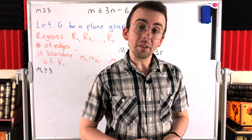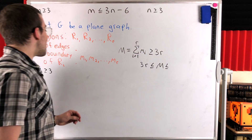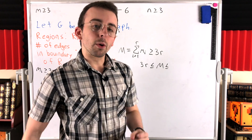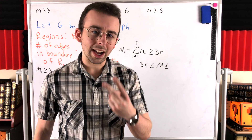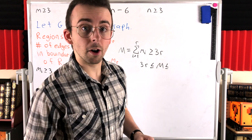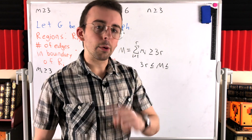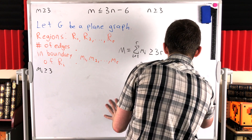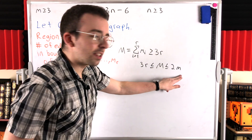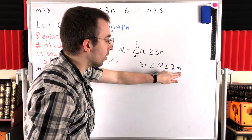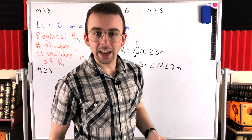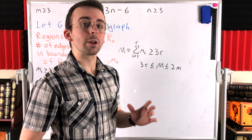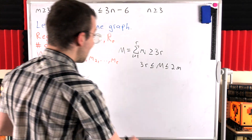So in total, every edge is counted at most twice in the sum of edges in region boundaries — twice if it's on a cycle, once if it's a bridge. So M is at most two times the number of edges, giving us M ≤ 2m.